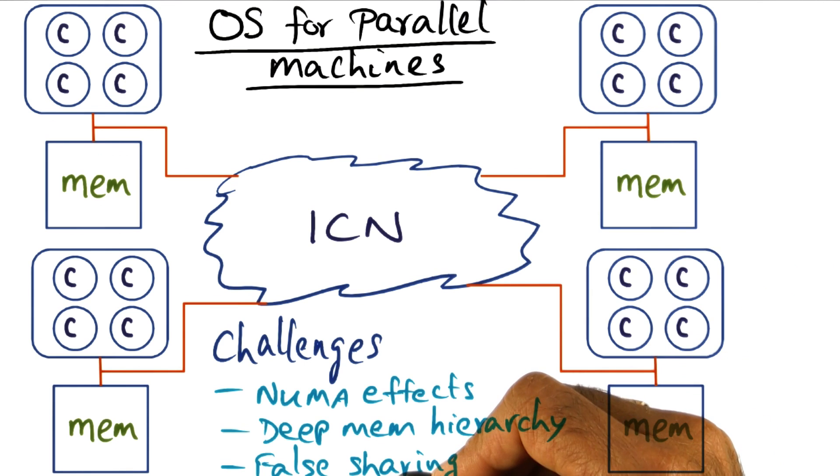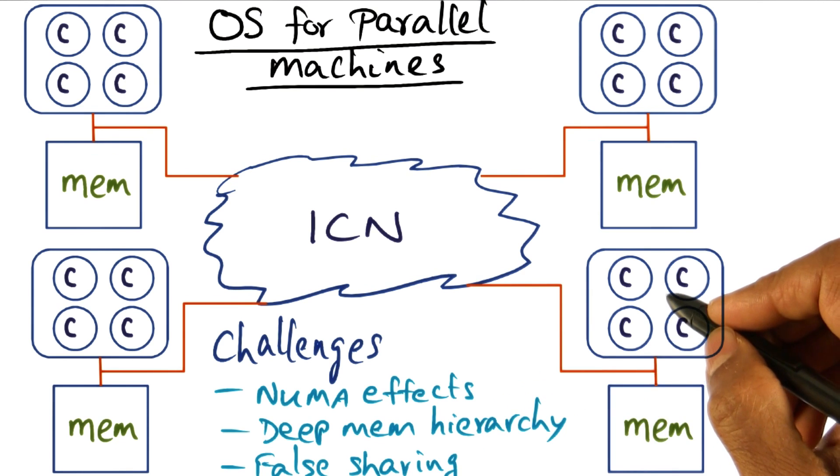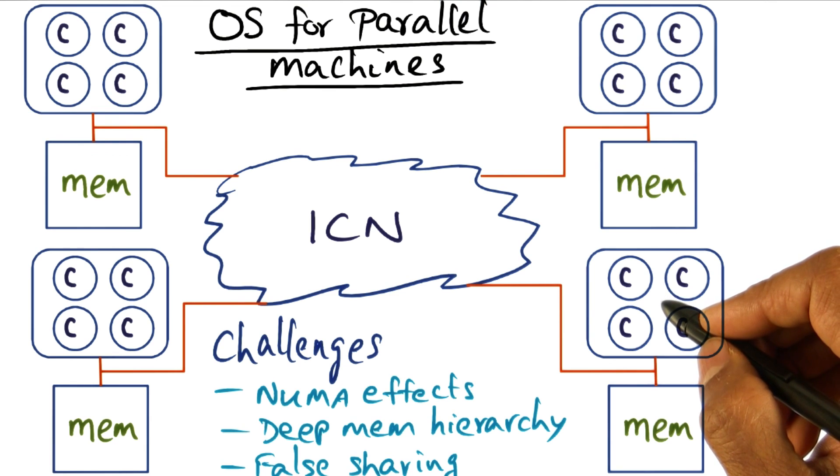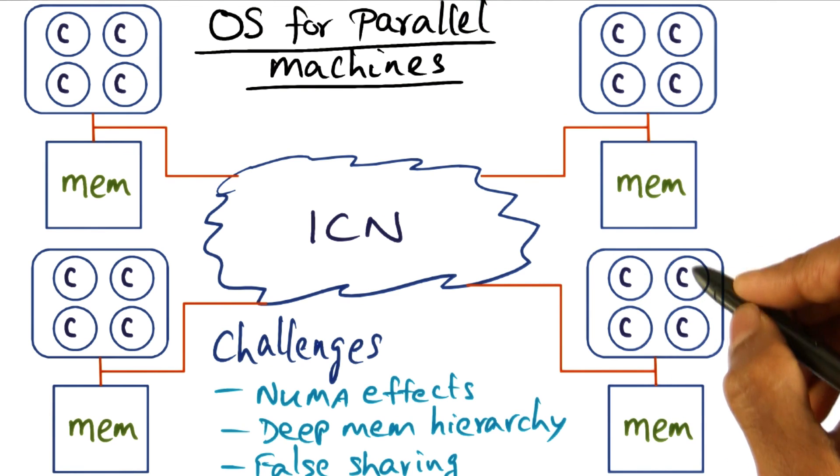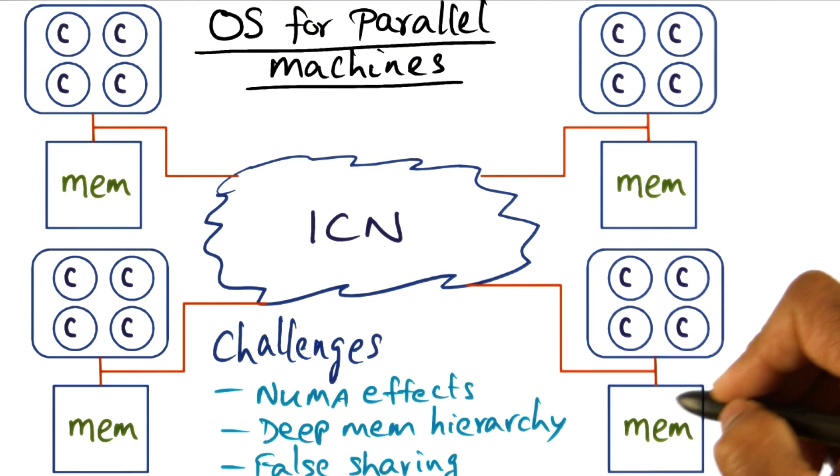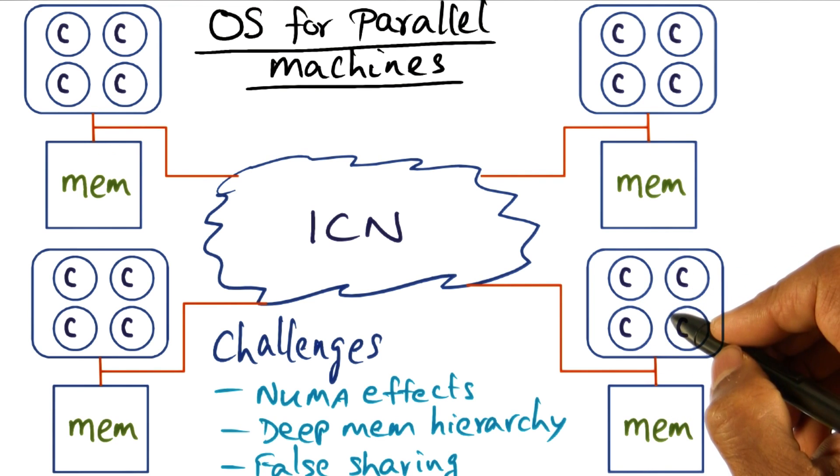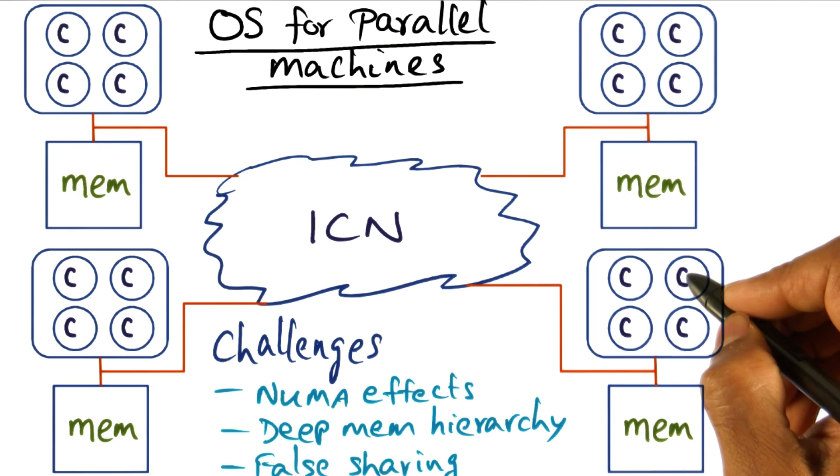And there is the issue of false sharing. And false sharing is essentially saying that even though programmatically, there is no connection between a piece of memory that is being touched by a particular thread executing on this core, another thread that is executing on this core. The cache hierarchy may make the block that contains the individual memory touched by different threads on different cores to be on the same cache block.